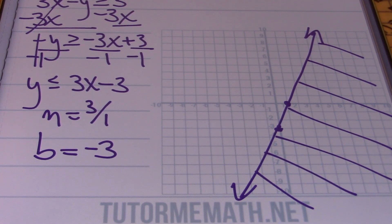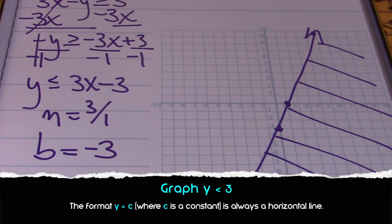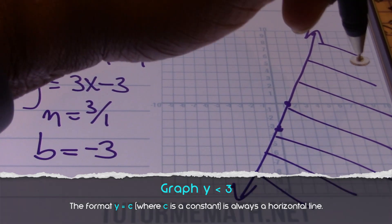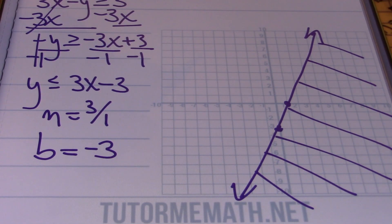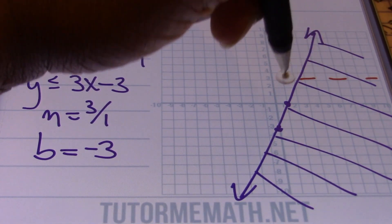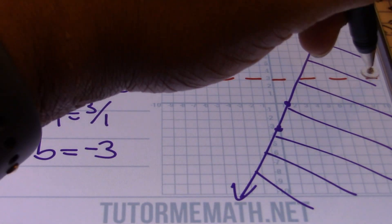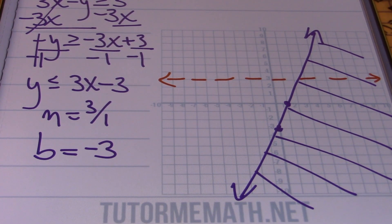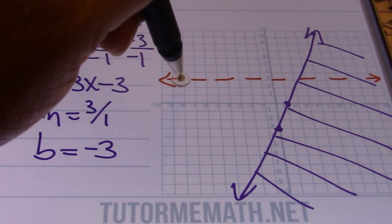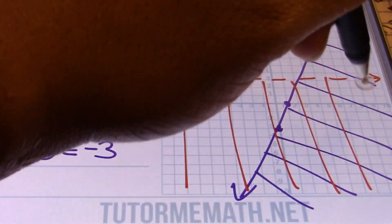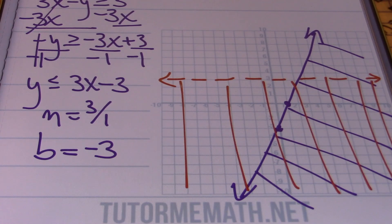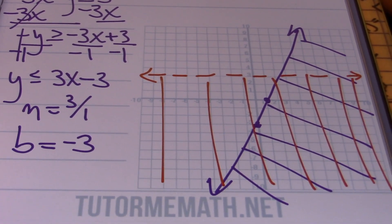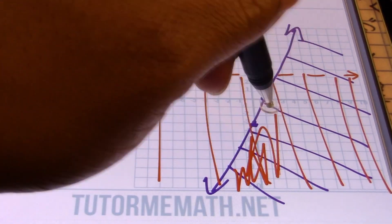Next, we'll graph y is less than 3. That's a horizontal line going through 3, and we'll use a dashed line to graph it. I need to shade beneath the line because it's less than. I need the overlapping areas for my intersection, and my solution lies right in that area — where both shadings overlap.